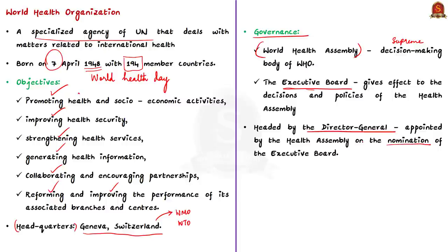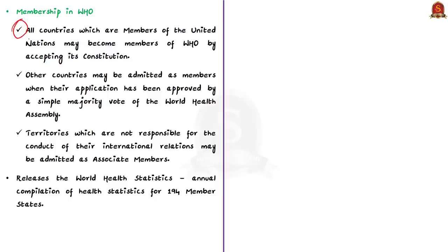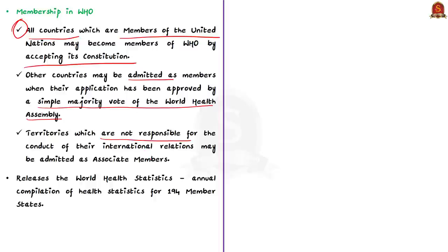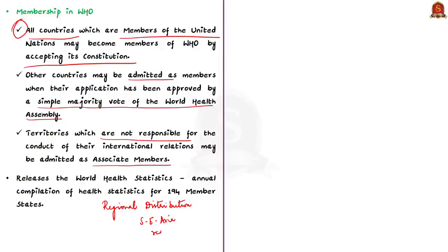All countries which are members of the United Nations may become members of WHO by accepting its constitution. Other countries may be admitted by a simple majority vote of the World Health Assembly. Territories not responsible for the conduct of their international relations may be admitted as associate members. Members of WHO are grouped according to regional distribution, and India comes under the South East Asia region. The WHO also releases the World Health Statistics, an annual compilation of health statistics for its 194 members.